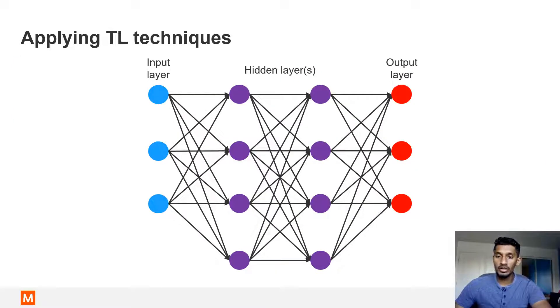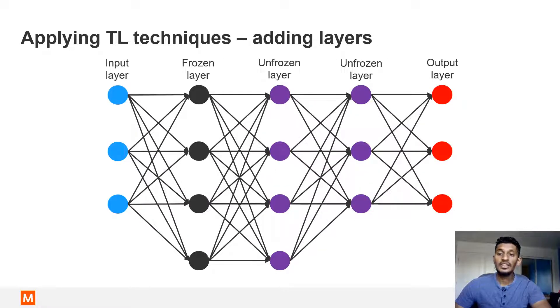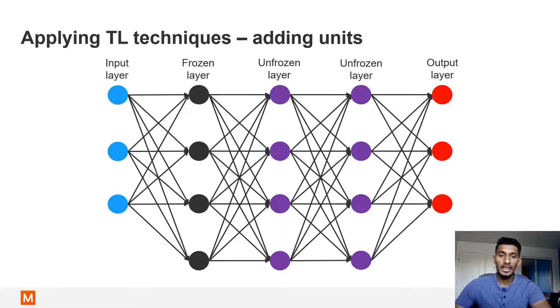So given a base model as shown here, transfer learning can be applied as follows. We can freeze an initial layer. This means the weights associated to the frozen layers are untrainable and therefore fixed. Only the latter layers are trainable. Then we can add extra hidden layers. Next, we can add units to these extra hidden layers.